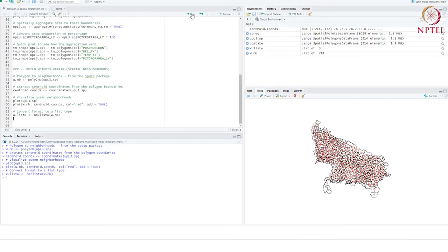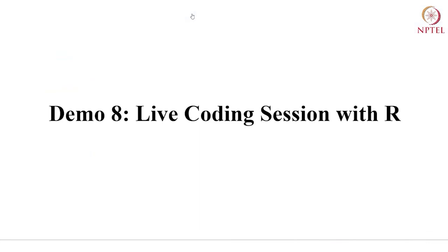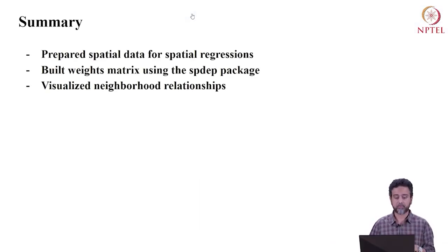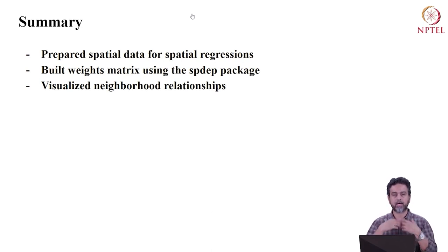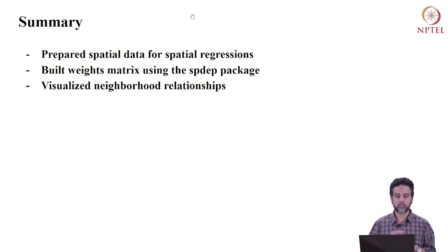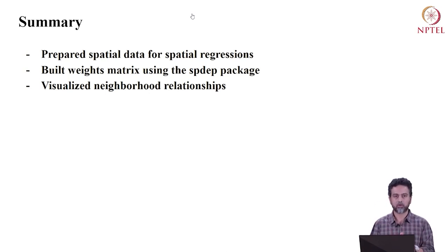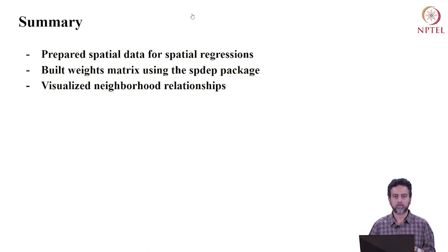We'll stop here for this session. To summarize: we prepared spatial data to run spatial regressions. That preparation involved loading the data, converting it into spatial data, aggregating it to sub-district level, plotting it, and examining the various variables. Then we built a weights matrix to encode the neighborhood relationships and visualized that relationship. We now have all the variables and data in place to actually start running our spatial regressions, which we will do in the next session. I encourage you to review this material thoroughly so that we're both ready for the next session. Thank you so much for your attention.